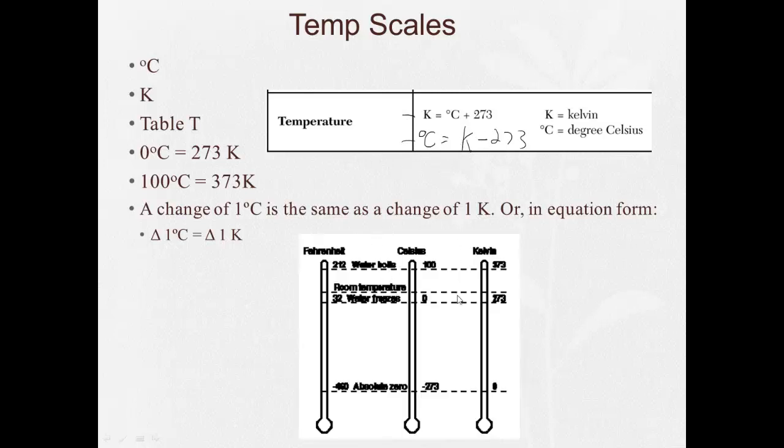So if we look at our temperature scales, Fahrenheit, we're not going to really use at all. But we can see here that a hundred degrees Celsius is equal to 373 Kelvin. Zero degrees Celsius is equal to 273 Kelvins. Minus 273 degrees Celsius is equal to zero Kelvins, which is also known as absolute zero.